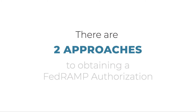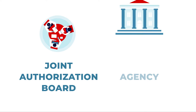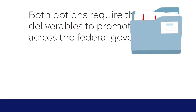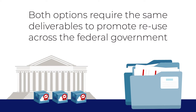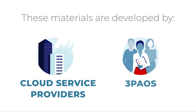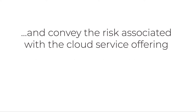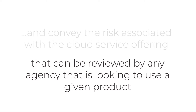There are two approaches to obtaining a FedRAMP authorization: through the Joint Authorization Board or through an agency. Both options require the same deliverables to promote reuse across the federal government. These materials are developed by cloud service providers and third-party assessment organizations (3PAOs) and convey the risk associated with the cloud service offering that can be reviewed by any agency looking to use a given product.